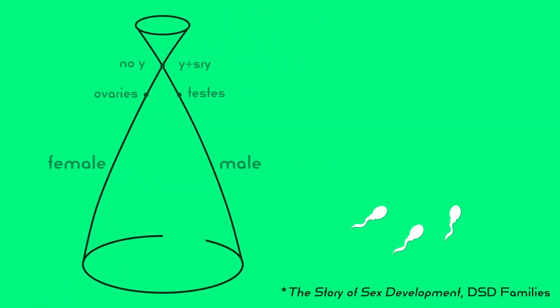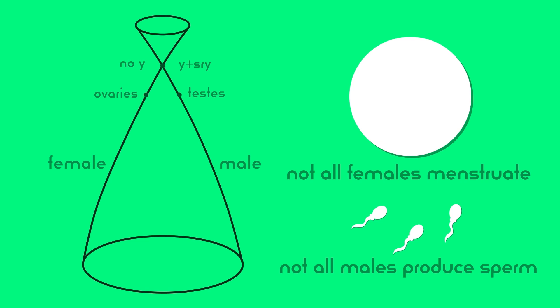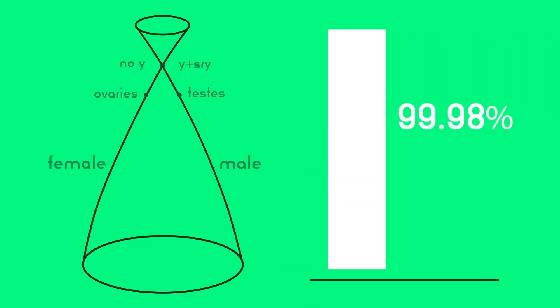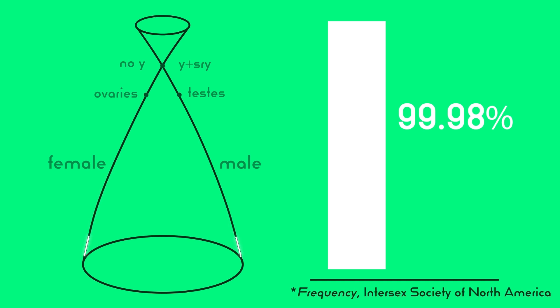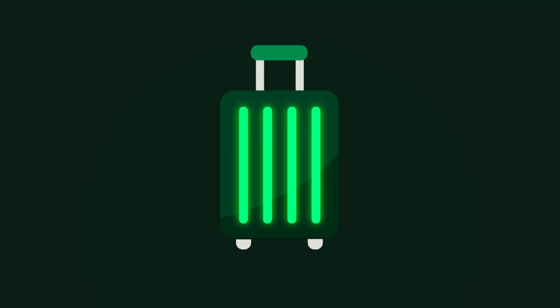You do not have to be able to produce sperm or eggs to be male or female, as there are plenty of females who do not menstruate, and plenty of males who do not produce sperm. 99.98% of births are unambiguously male or female. Classical intersex conditions, which comprise the remaining 0.02% of births — sometimes with a mix of ovarian and testes tissue — do not destabilize the foundation of biological sex.